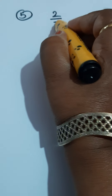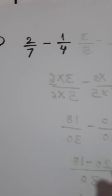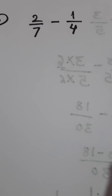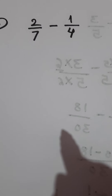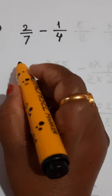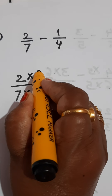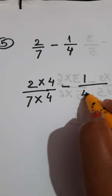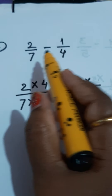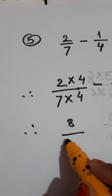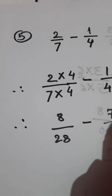Now see the last problem of this practice set: 2 upon 7 minus 1 upon 4. Observe the denominators — first denominator is 7 and second denominator is 4. They are also not from the same table. So the same procedure: multiply the first fraction by the second denominator, and multiply the second fraction by the first denominator. Write down the first fraction: 2 upon 7. Multiply the fraction by the second denominator, that is 4. Then give minus sign. Write down the second fraction: 1 upon 4. Multiply the second fraction by the first denominator, that is 7.